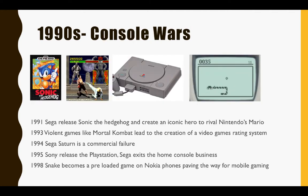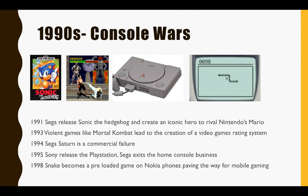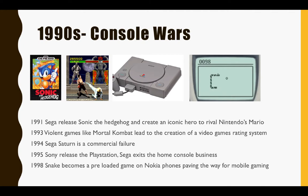In the early 1990s, Nintendo and Sega were still fighting to become the dominant gaming platform. In 1991, Sega released Sonic the Hedgehog, creating an iconic hero to rival Nintendo's Mario. Advances in technology had created many different genres of games, and advances in graphics meant that the visuals of games had become much more realistic.